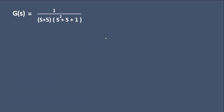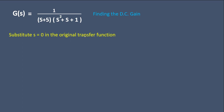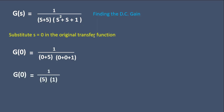However, we cannot directly remove the insignificant pole. First we need to find the DC gain of the original transfer function by substituting s = 0. Substituting s = 0 gives a DC gain of 1/5.